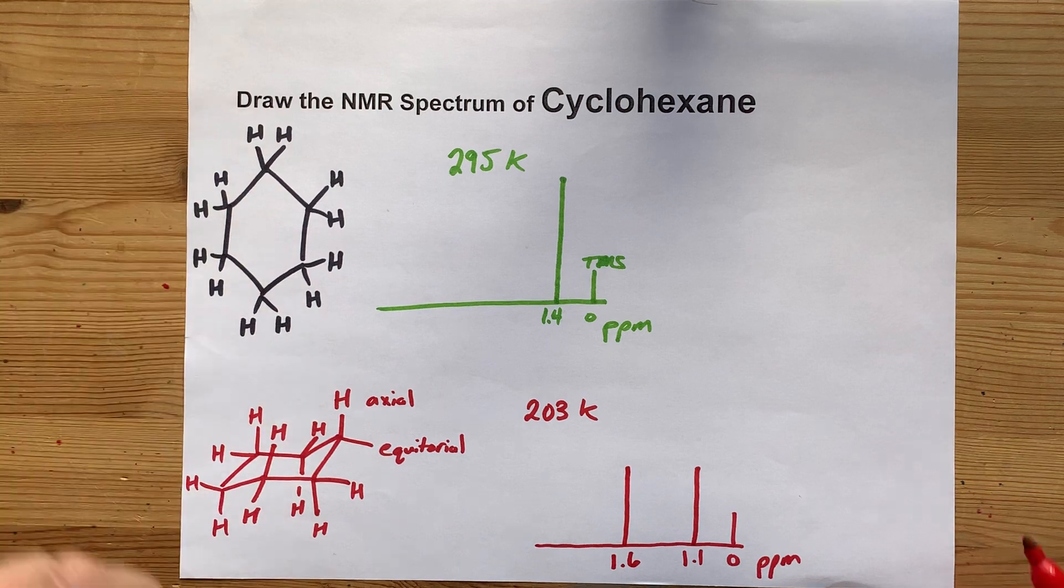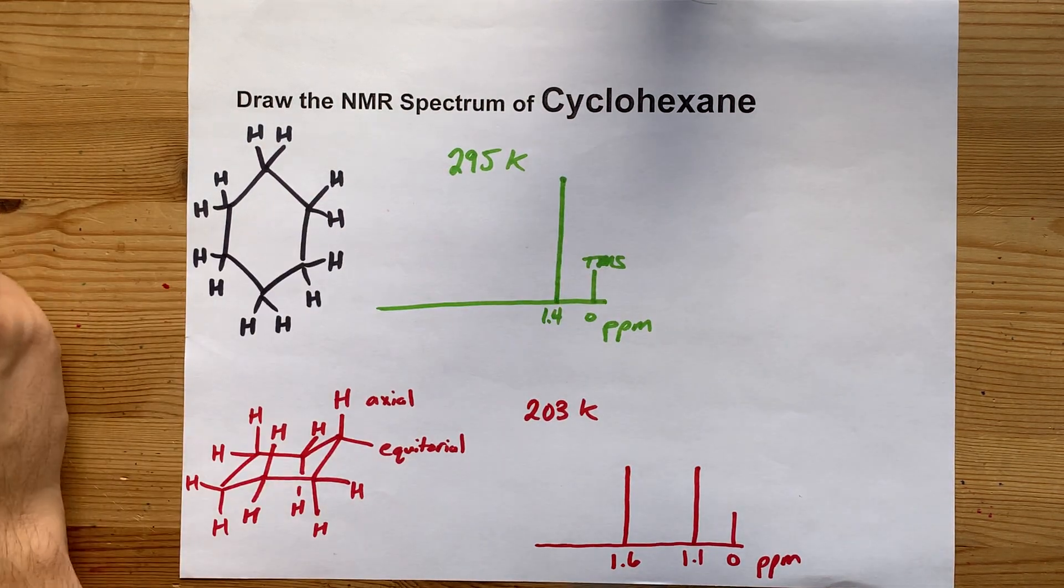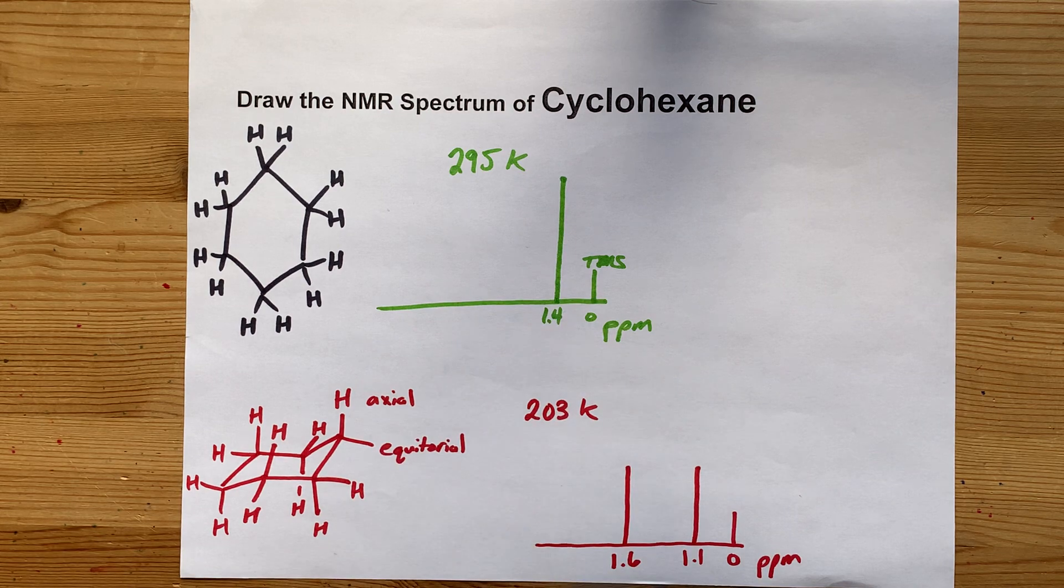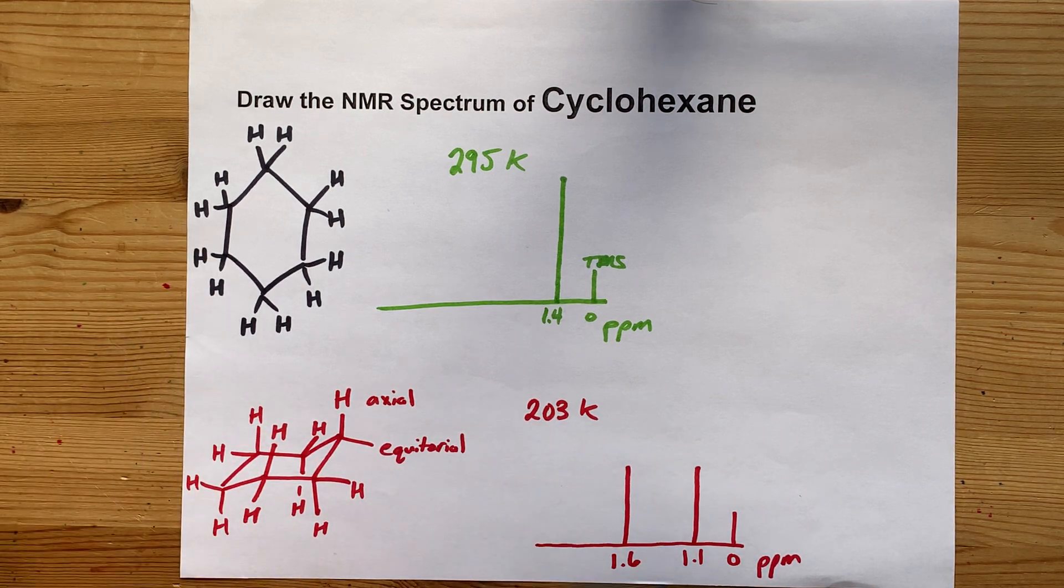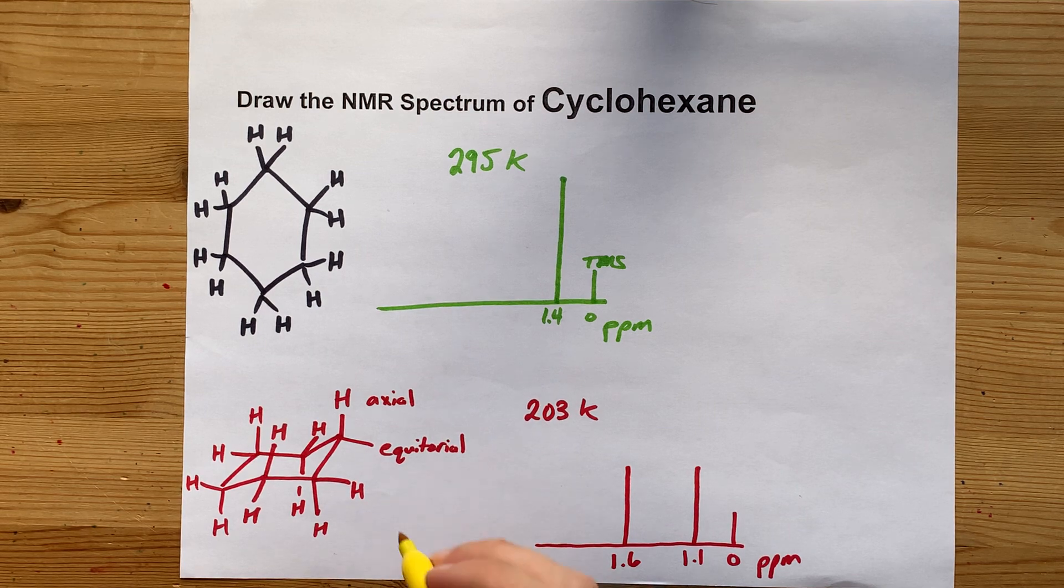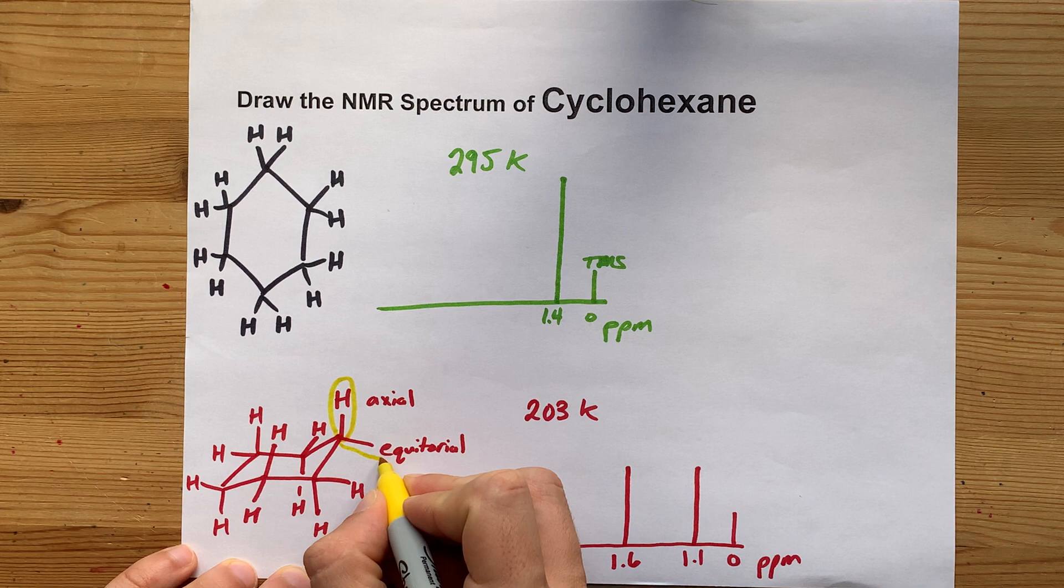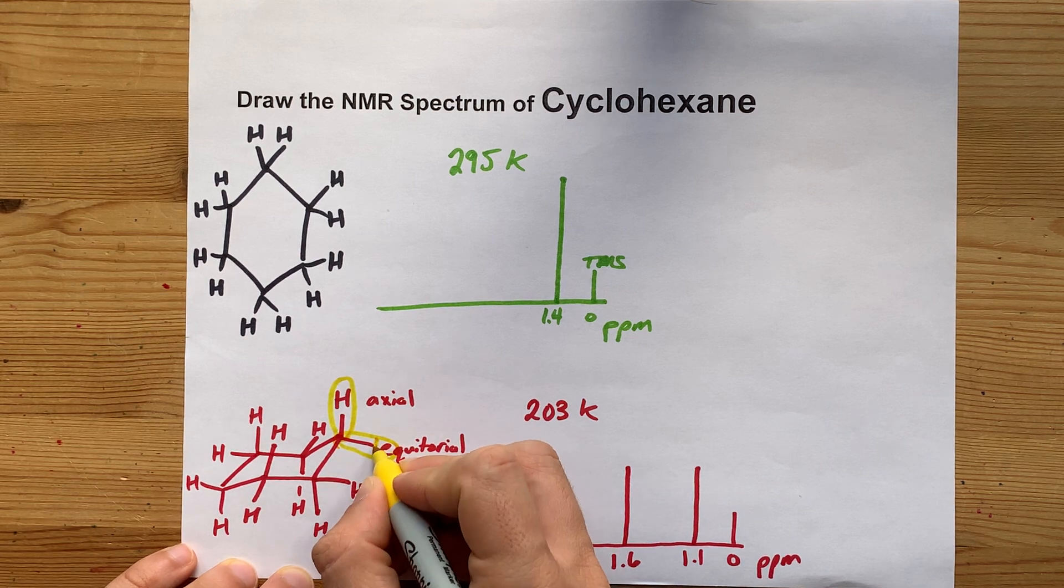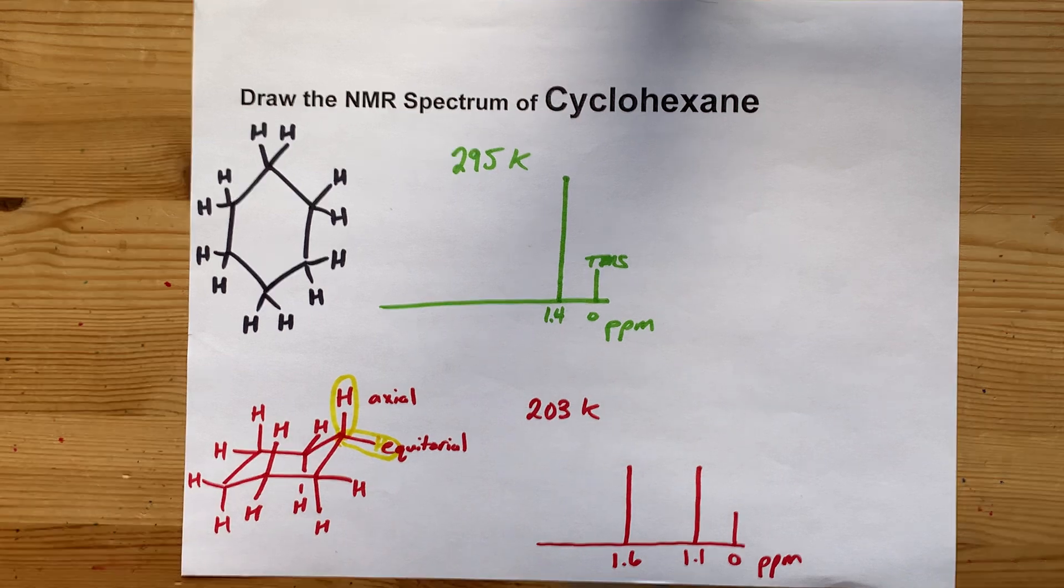I've rounded these a little bit. But the idea is that NMR is measuring the environment that each hydrogen is in. And at a cold enough temperature where the molecule is in a position for just long enough that an NMR can see it distinctly, the axials and the equatorials end up being separate and distinct from each other because of the electron repulsion.